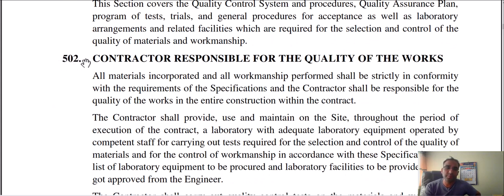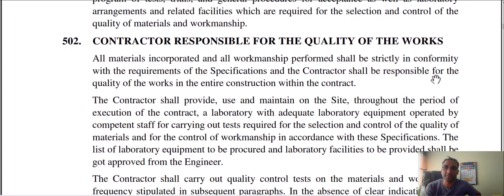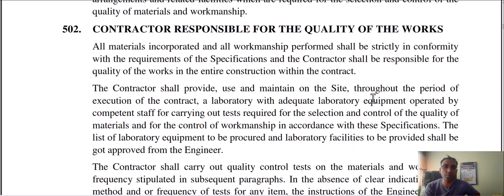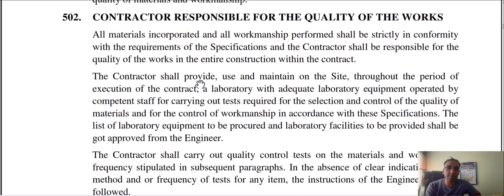Specification section 500 covers the contractor's responsibility for the quality of the work. The contractor shall provide, use, and maintain on site, throughout the period of execution of the contract, a laboratory with adequate equipment operated by competent staff for carrying out tests required for the selection and control of quality of materials and for control of workmanship in accordance with the specification. The list of laboratory equipment shall be procured and the laboratory facility shall be approved by the engineer.